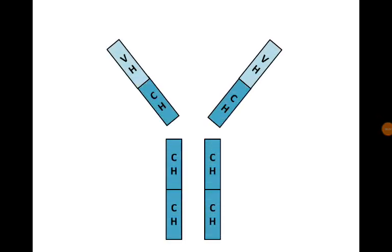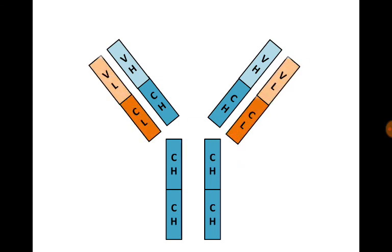Each immunoglobulin is formed of 4 polypeptide chains: 2 heavy chains, each one is formed of 3 constant parts and 1 variable part, and 2 light chains, each one is formed of 1 constant part and 1 variable part.